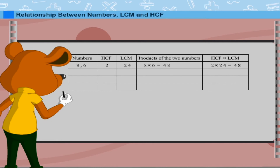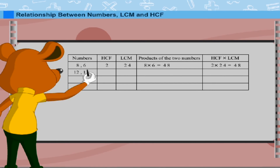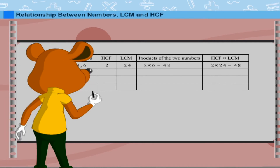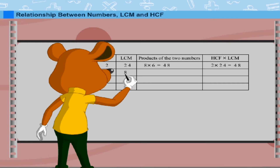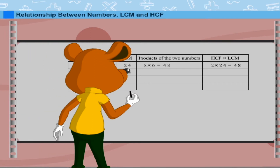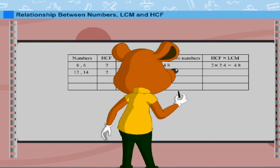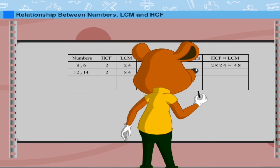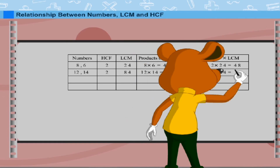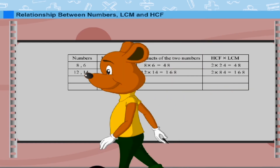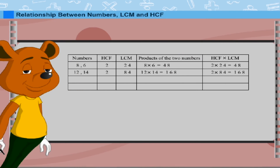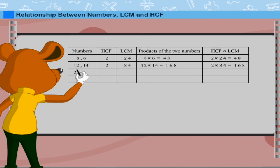He takes the next example: 12 and 14. The HCF is 2 and the LCM is 84. The product 12 × 14 = 168, and the product of HCF and LCM, 2 × 84, is also 168.